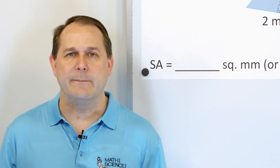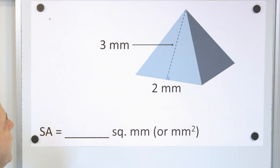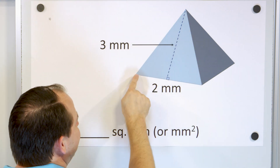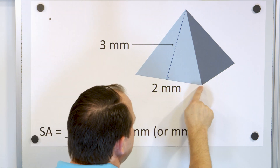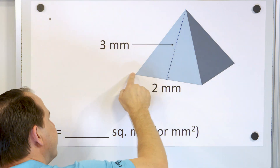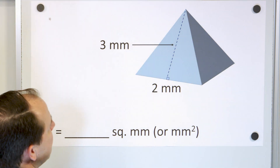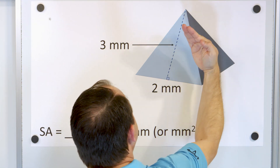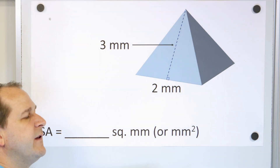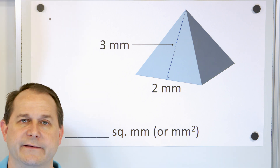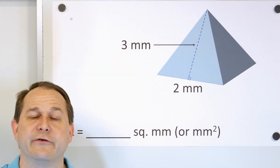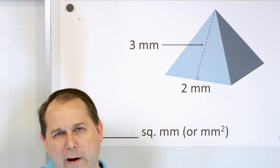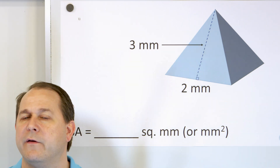I want you to understand where it's coming from. We have a triangle on this face. This is a square-based pyramid, so one, two, and then behind three, and then four sides — square-based. We have a triangle on this face, a triangle here, a triangle face on the back, and a triangle face on the side. So we have four triangle faces, one on each side of this square-based pyramid. And the base of the thing is actually a square.